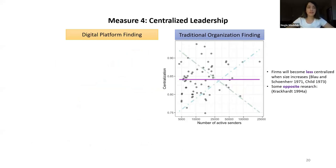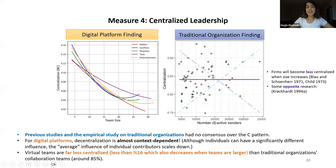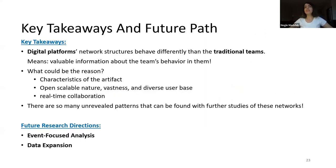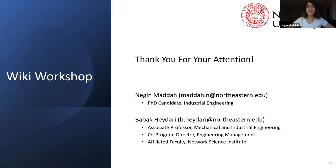The last measure is centralized leadership. There are many patterns between centralization and network size, but interestingly, in Wikipedia, as the network grows, it becomes more decentralized, and centralization is much lower than in previous studies. Overall, the structural behavior of digital platforms in Wikipedia is significantly different from traditional teams, which is very important for the designers and governors of these digital platforms. Thank you for listening, and I hope this presentation was useful.